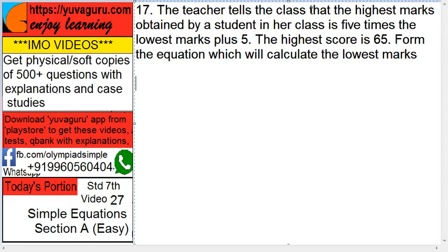The highest marks obtained by the students in our class is 5 times the lowest marks plus 5. The highest marks score is 65. Form the equation which will calculate the lowest marks. You have to form the equation only — you don't have to solve it.